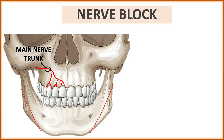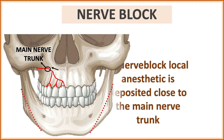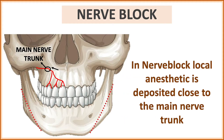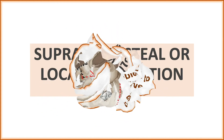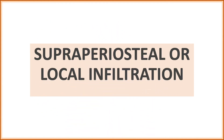In field block we have a main nerve trunk. If we infiltrate the local anesthetic into the main nerve trunk itself, that is called a nerve block. In a nerve block, the local anesthetic is deposited close to the main nerve trunk.